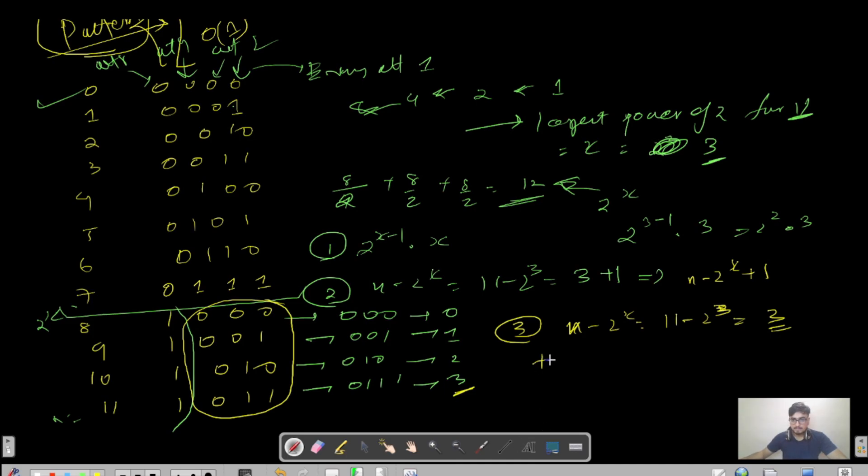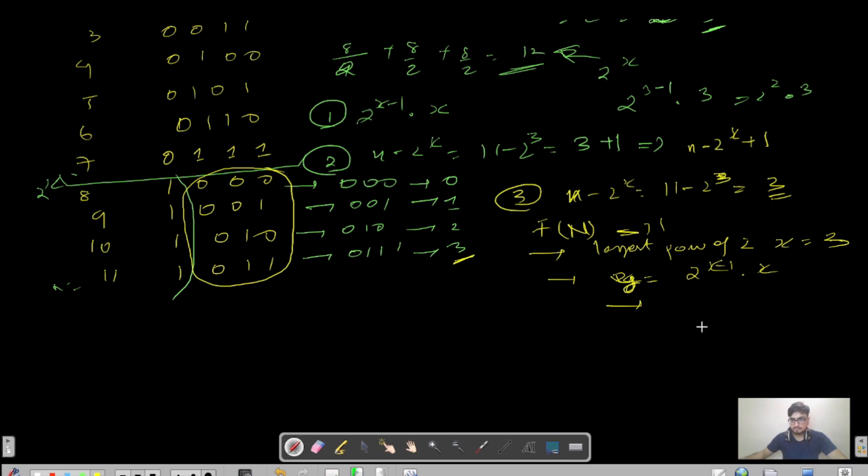Third, we have to recur the same function for this smaller sub-case. The smaller input is 0, 1, 2, 3. Can we obtain this 3 using n and 2 power x? If we do n minus 2 power x, we get 11 minus 8 equals 3. So we will have a function with parameter n. We will first find the largest power of 2, let's call it x. Second, we make a variable y which stores 2 power x minus 1 times x. Then z stores n minus 2 power x. We return y plus z plus 1 plus the recursive call for z. This is our entire pseudo code.